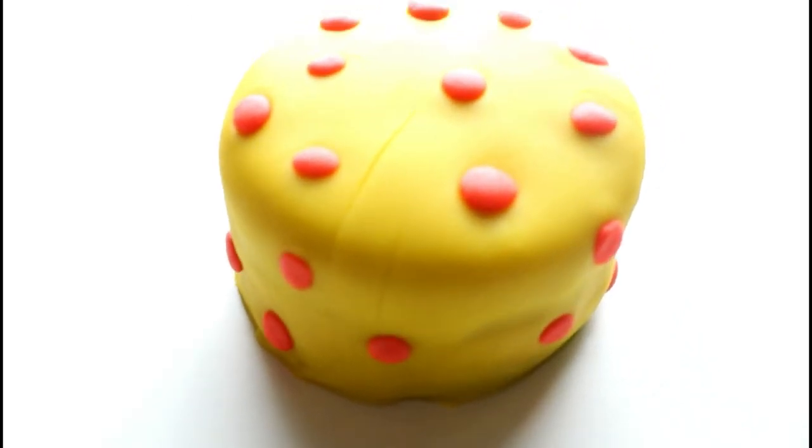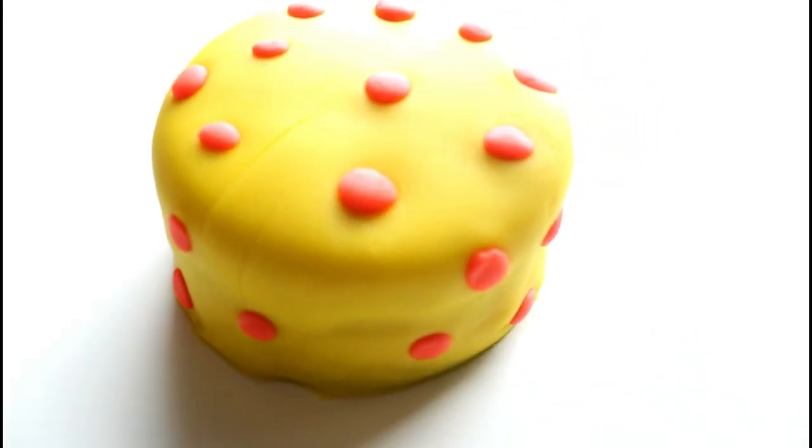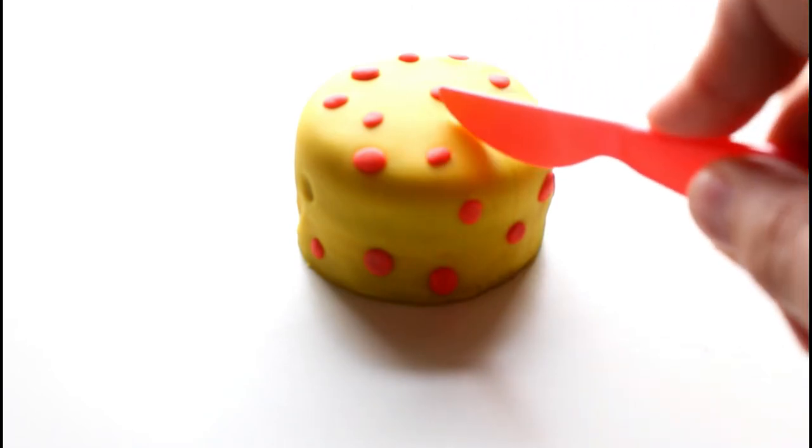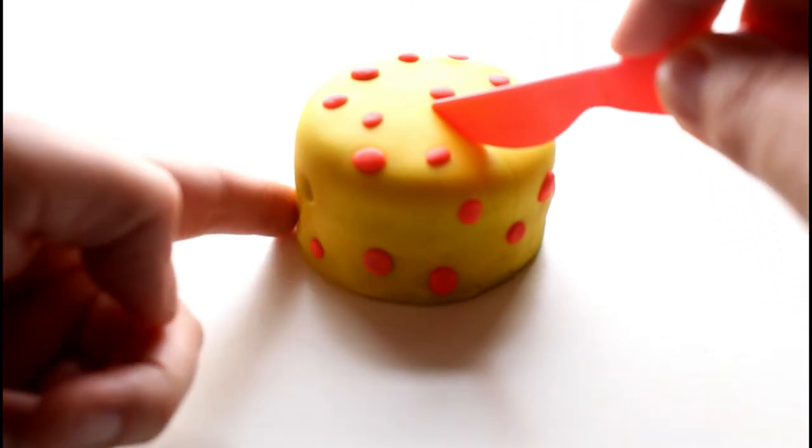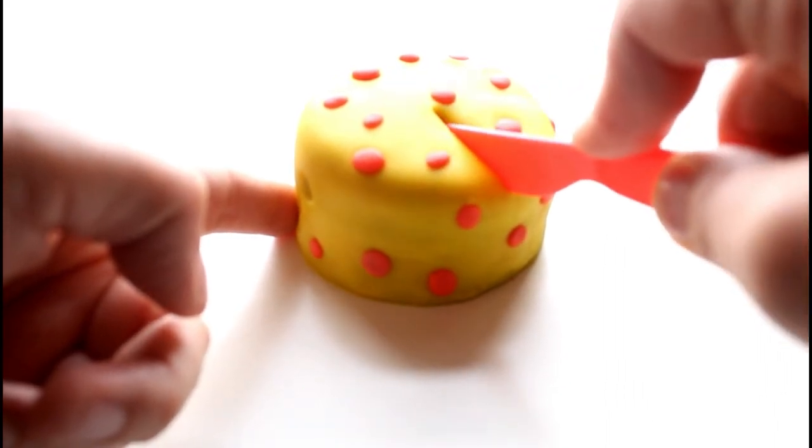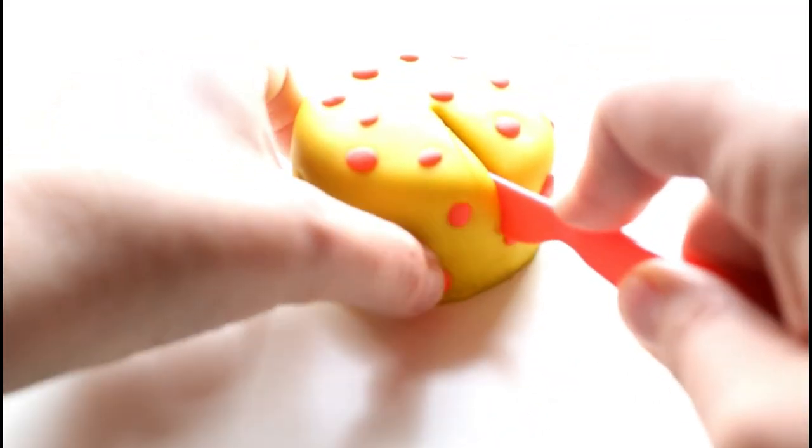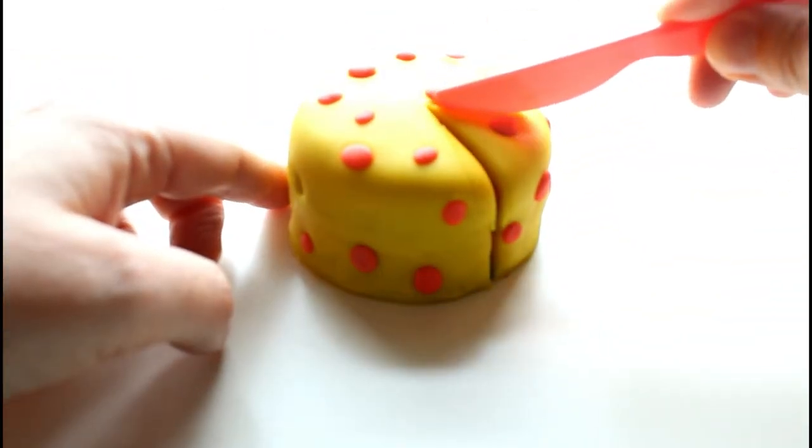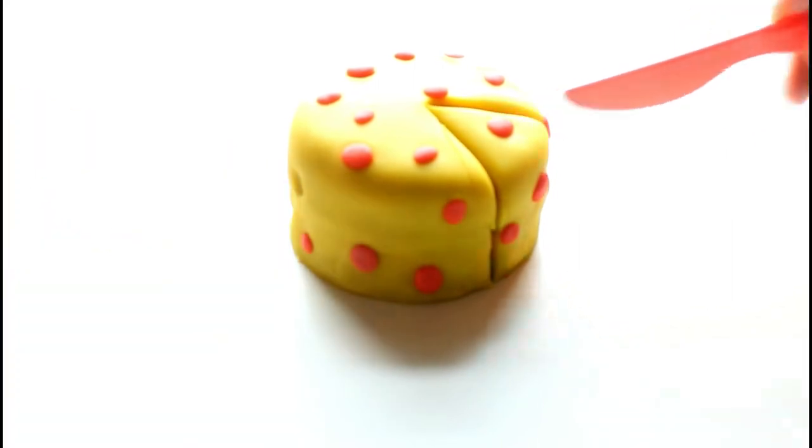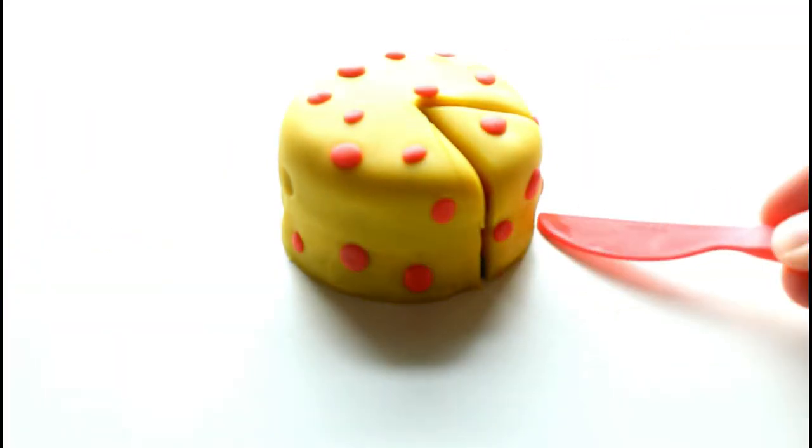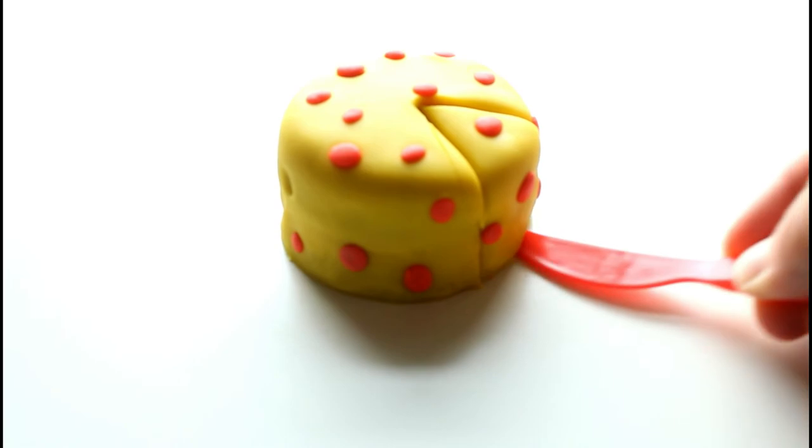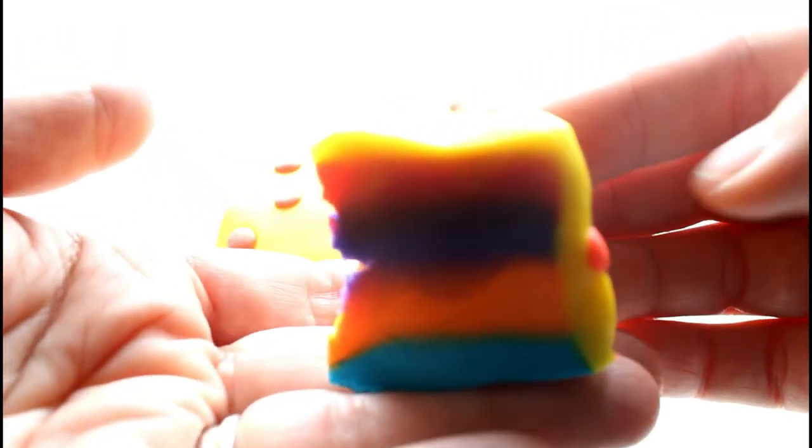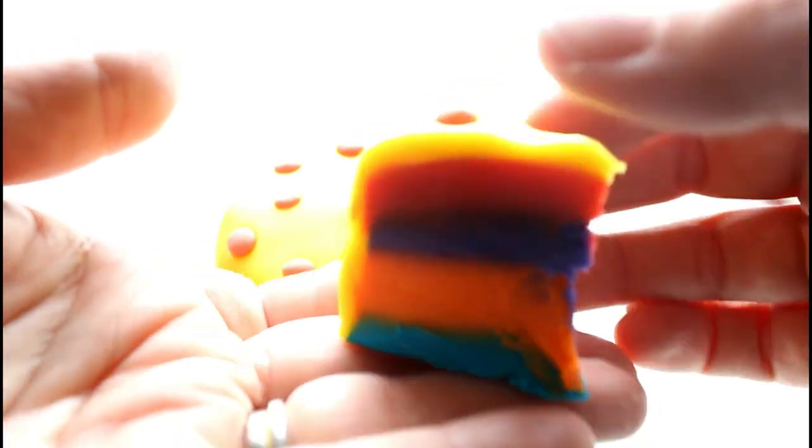And here we have our beautiful rainbow cake. Okay guys, now here is the final test, the ultimate test. Let's see what it looks like inside. Here we have it guys, here is our slice of our play-doh rainbow cake. It looks really neat.